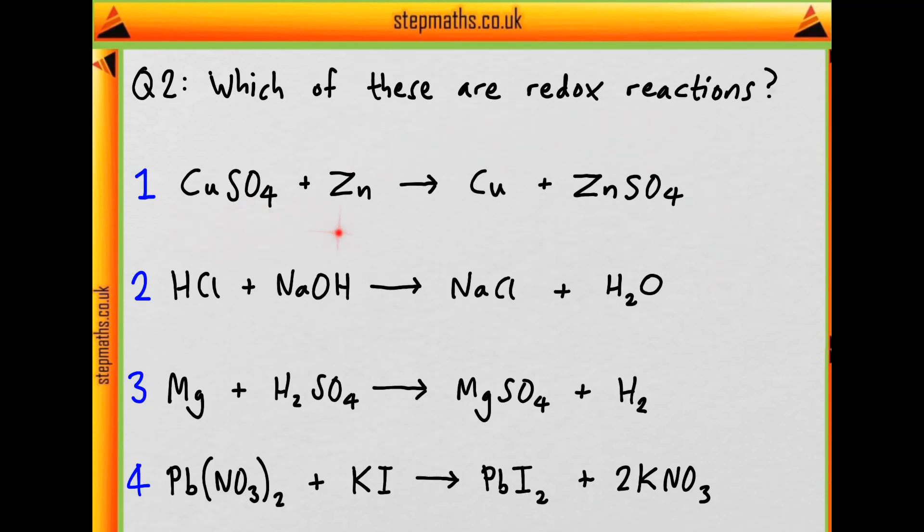Firstly, copper sulphate and zinc form copper and zinc sulphate. Then hydrochloric acid and sodium hydroxide form sodium chloride and water. Then magnesium and sulphuric acid form magnesium sulphate and hydrogen. Then lead nitrate and potassium iodide form lead iodide and potassium nitrate.